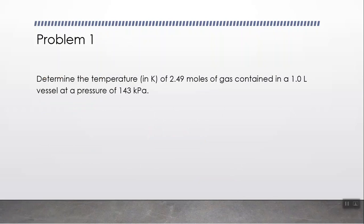Let's take a look at problem number one. Determine the temperature in Kelvin of 2.49 moles of gas contained in a 1.0 liter vessel at a pressure of 143 kilopascals. We see that moles are given with set conditions. There's one value for volume and one for pressure. That's how we know we'll be using ideal gas law, PV equals nRT. Let's define all these variables. N equals 2.49 moles, volume is 1.0 liters, and pressure is 143 kilopascals.